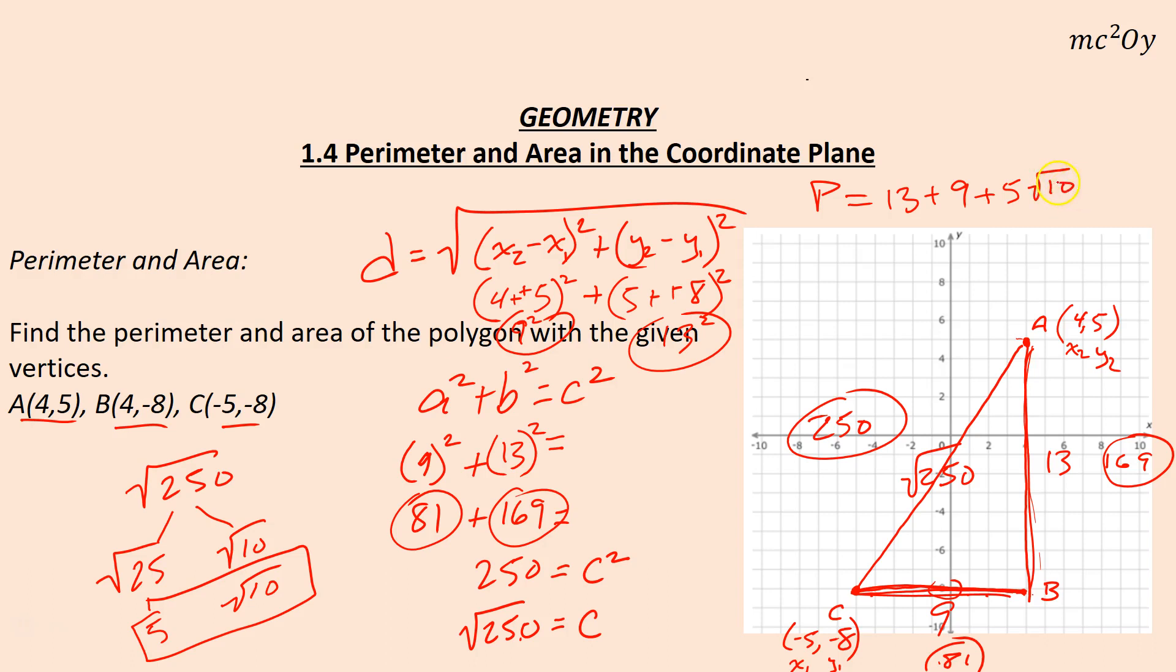The 5 is counting how many root 10s you have. 13 and 9 are just units, so 13 + 9 is 22. You can't combine the 22 and the 5 because the 5 is counting your root 10s. So the perimeter is equal to 22 + 5√10. That's the exact answer.